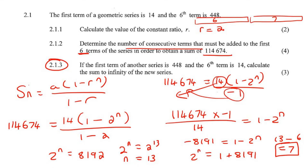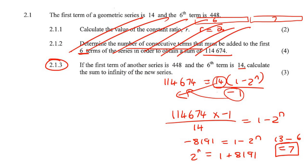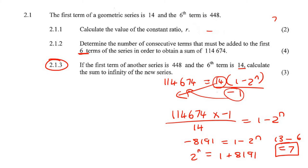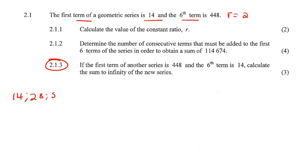This next question says: if the first term of another series is 448 and the sixth term is 14, calculate the sum to infinity of the new series. In the original series, starting at 14 with r = 2, the terms go 14, 28, 56, 112, 224, 448 — so 448 was the sixth term. Now this new series starts at 448 and goes down, so the r value is a half.